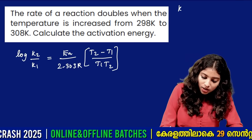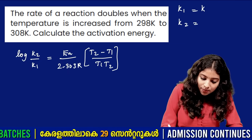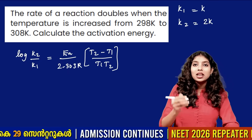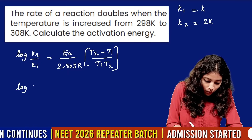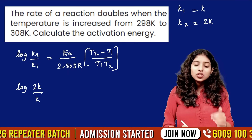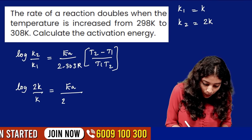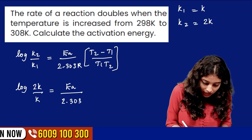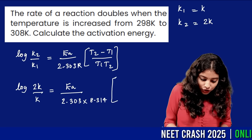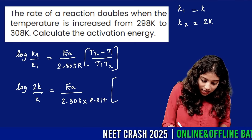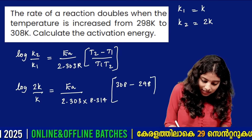At temperature T1 the rate constant is K1, at T2 it is K2 = 2K. We substitute: log(2K/K) = log 2. Ea divided by 2.303 × R × 8.314, with T2 = 308 K and T1 = 298 K, so T2 − T1 = 10.